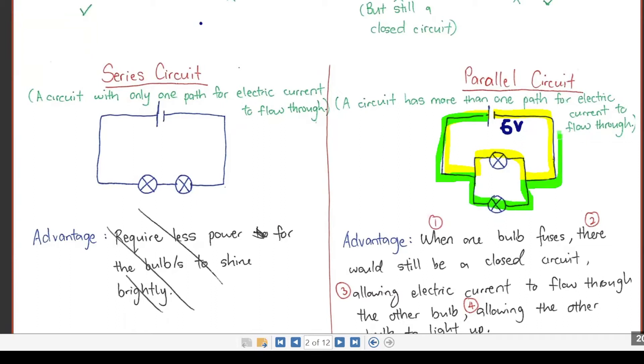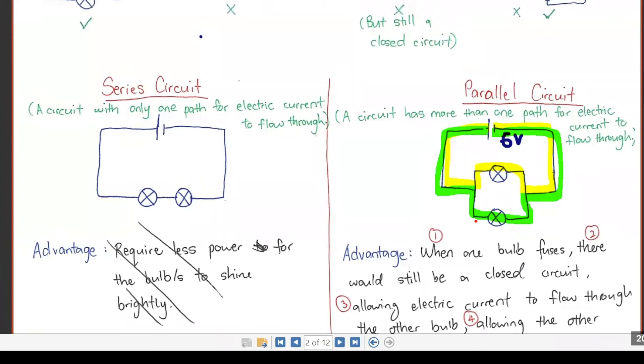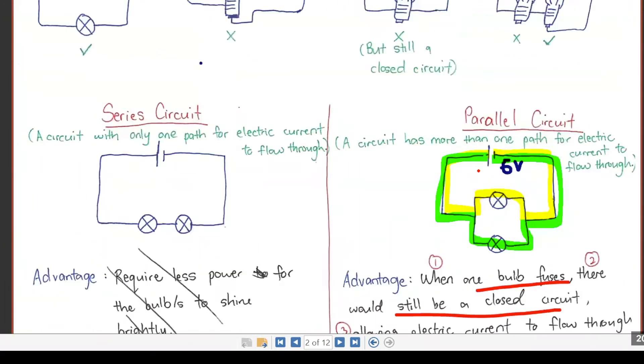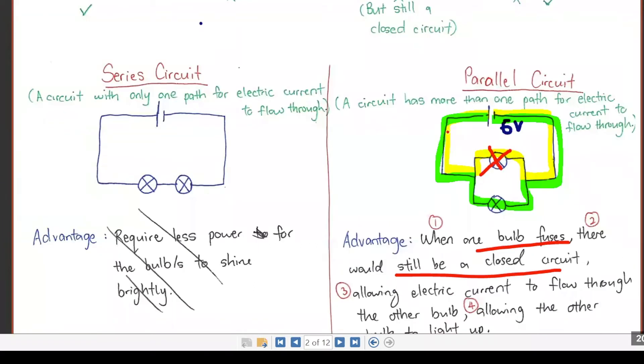You need to share, but I got two closed circuits. So I said before, what happens when one bulb fuses? There will still be a closed circuit, right? So if one bulb fuses, you still can allow electric current to flow through the other side.